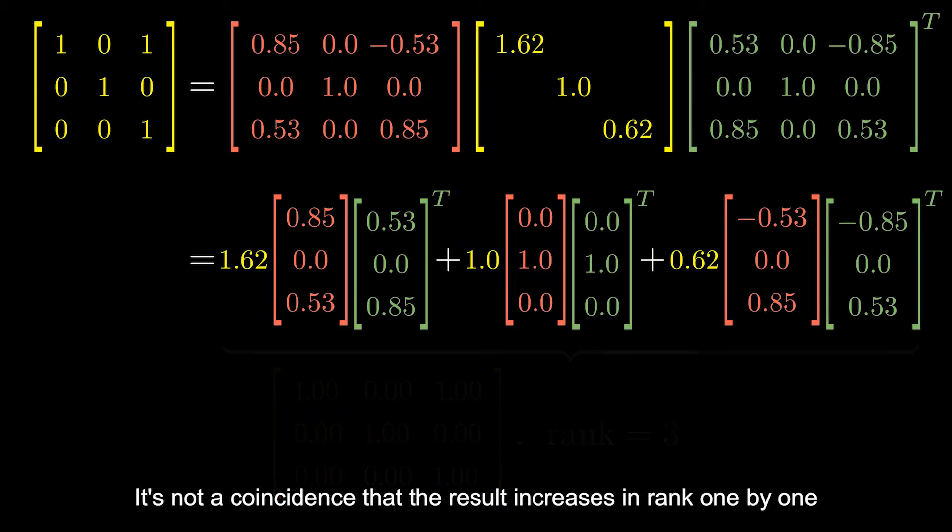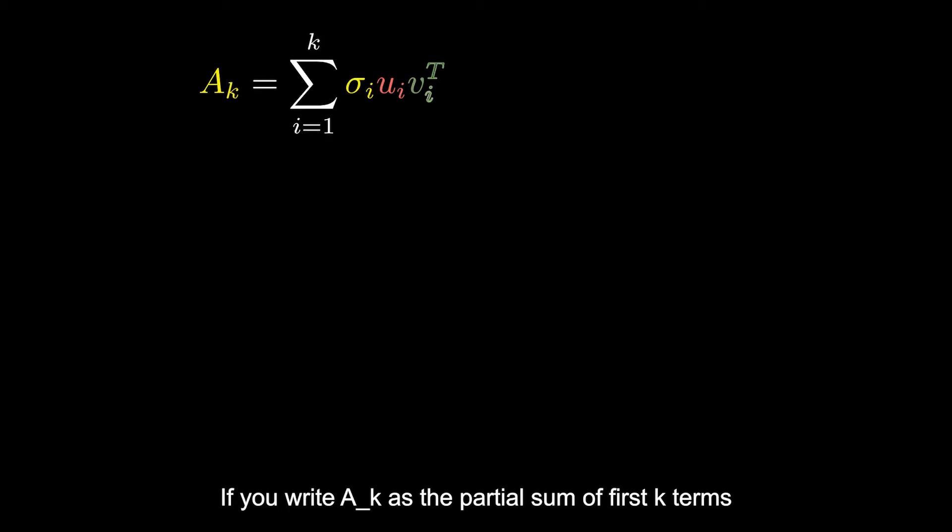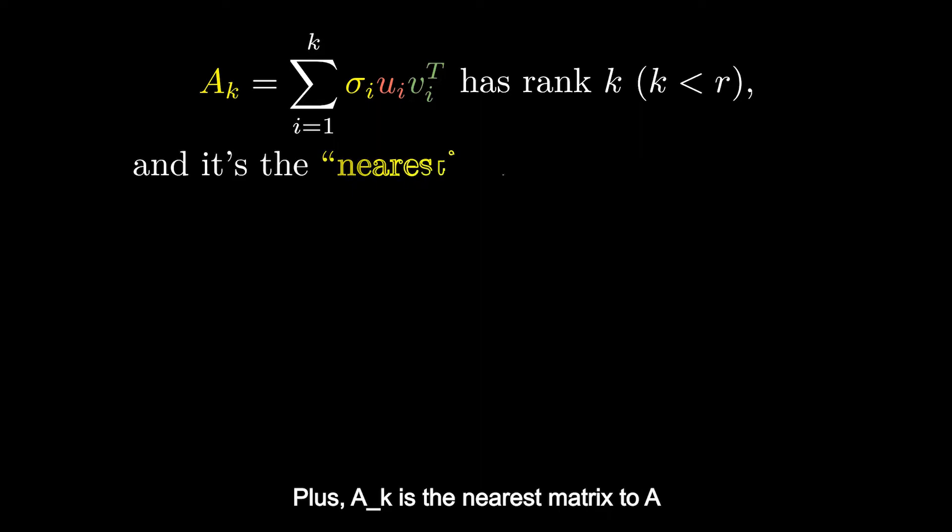It's not a coincidence that the result increases in rank one by one and becomes closer and closer to A. Actually, we have this theorem. If we write A_k as the partial sum of first k terms, then A_k has rank k, where k shouldn't be greater than A's rank. Plus, A_k is the nearest matrix to A in rank k.